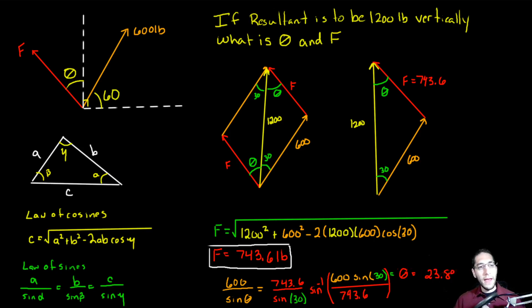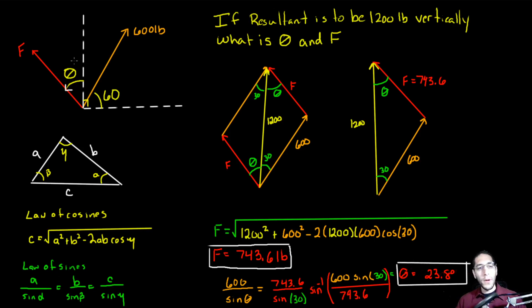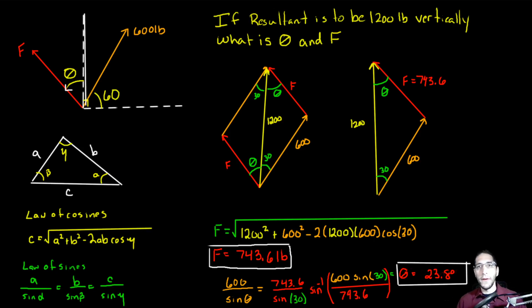So we need to apply this force at an angle of 23.8 degrees from the vertical and give it a magnitude of 743.6 pounds in order to have our resultant force that's completely vertical.